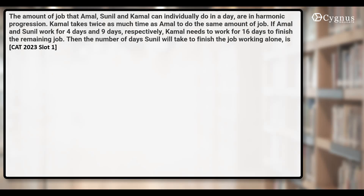This is a question from CAT 2023 Slot 1. The amounts of work that Amal, Sunil, and Kamal can individually do in a day are in harmonic progression. We know that if the terms are in harmonic progression, then their reciprocals must be in arithmetic progression. So the work done by Amal, Sunil, and Kamal are in HP.